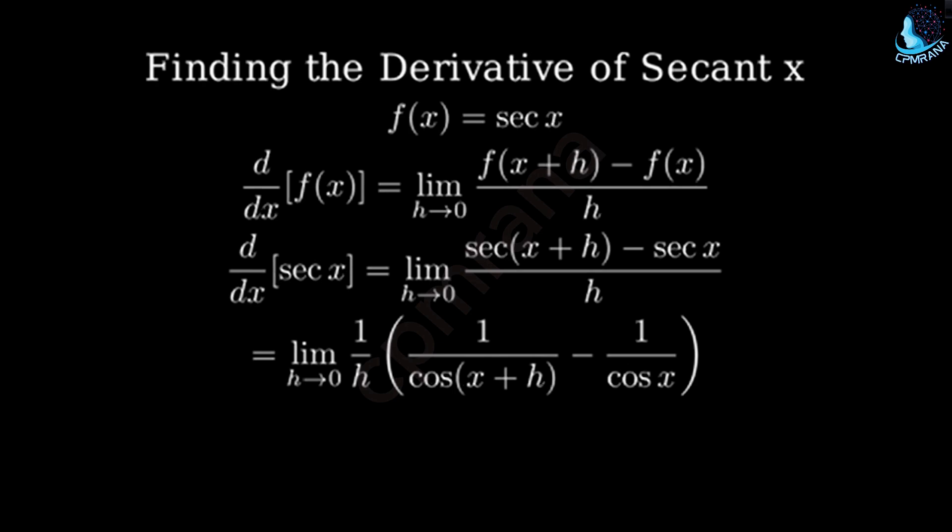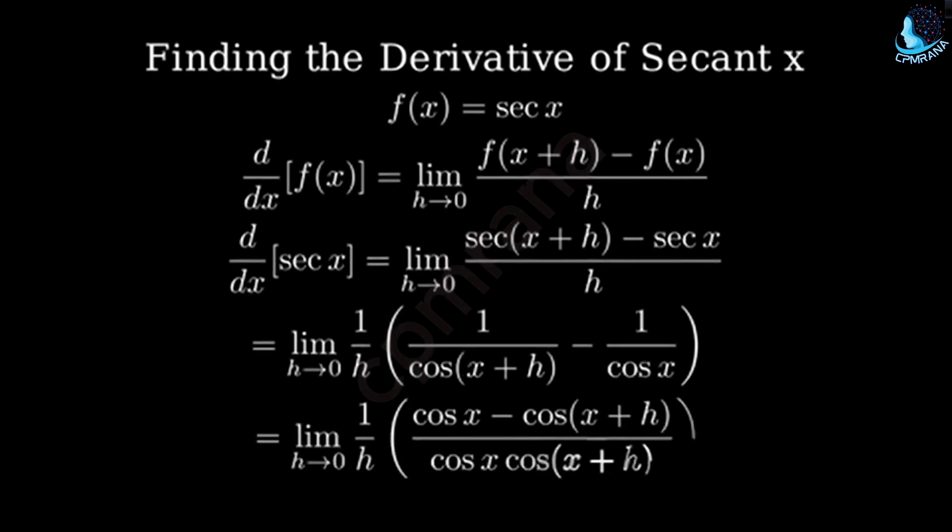To subtract these fractions, we need a common denominator. Multiplying both terms by cos x cos(x+h) over cos x cos(x+h) gives us cos x minus cos(x+h) over cos x cos(x+h).